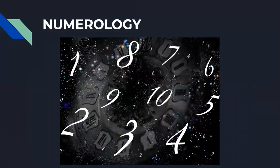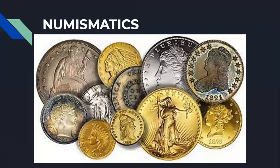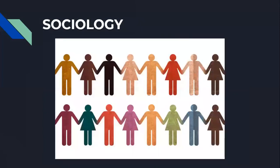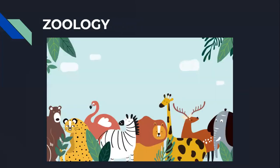Numerology is the study of numbers. The study of coins is called numismatics. Psychology — the study of mind. Sociology — the word society has come from here only — sociology is the study of society.